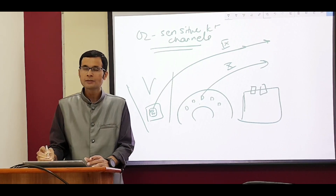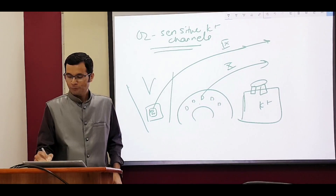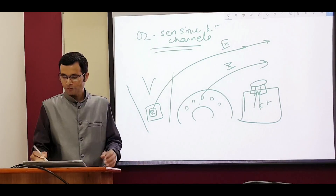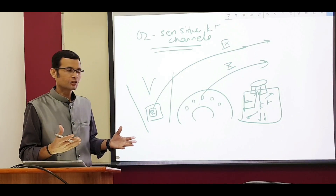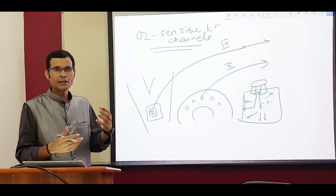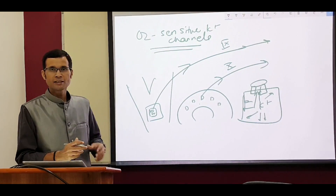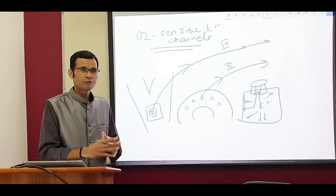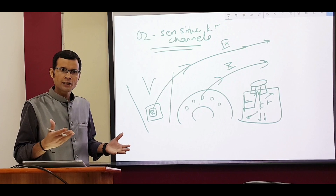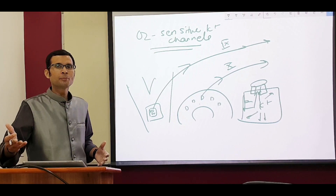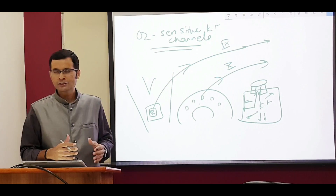When the O2-sensitive potassium channel in the glomus cell senses hypoxia, it will close, meaning potassium cannot leak out of the cell. Potassium coming near the membrane causes membrane excitation — the glomus cell generates a receptor potential, is depolarized, and then generates impulses in the 9th and 10th cranial nerves. These signals stimulate the respiratory center so that ventilation is increased, hypoxia is corrected, and signals are also sent to the vasomotor center in the medulla.